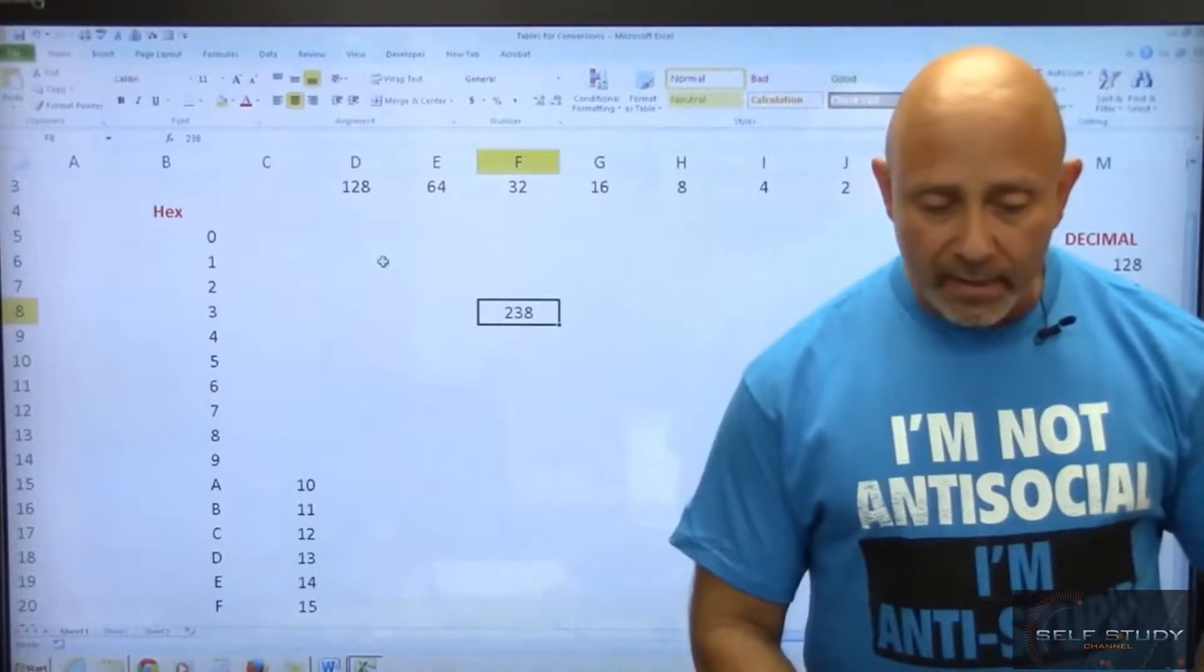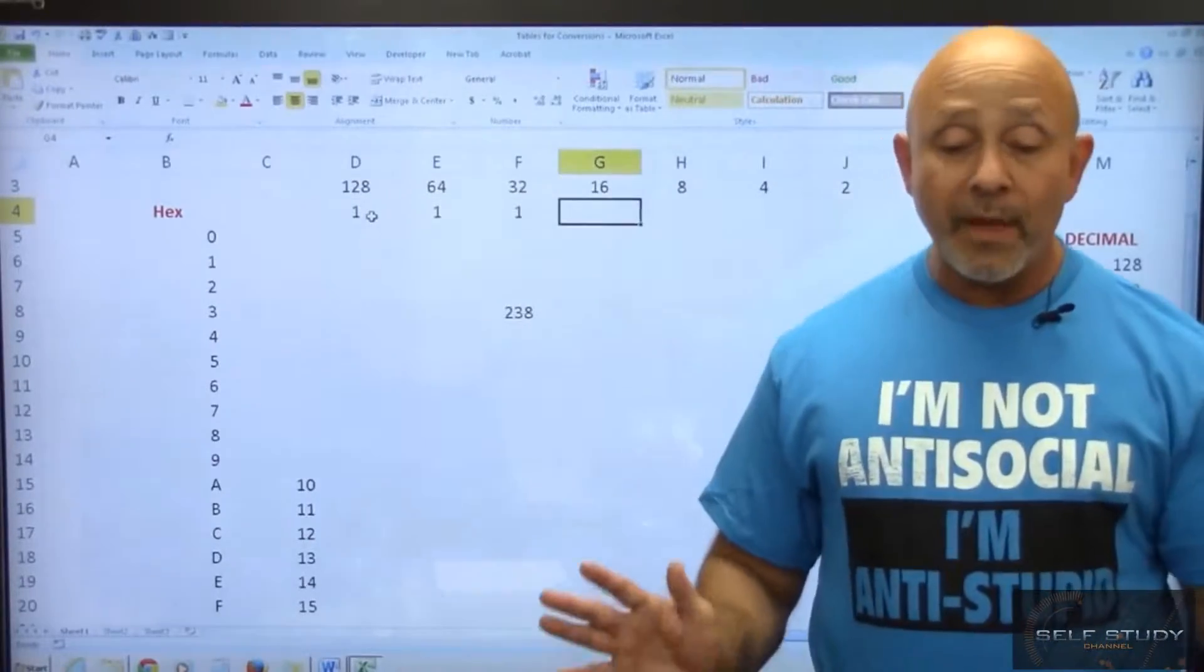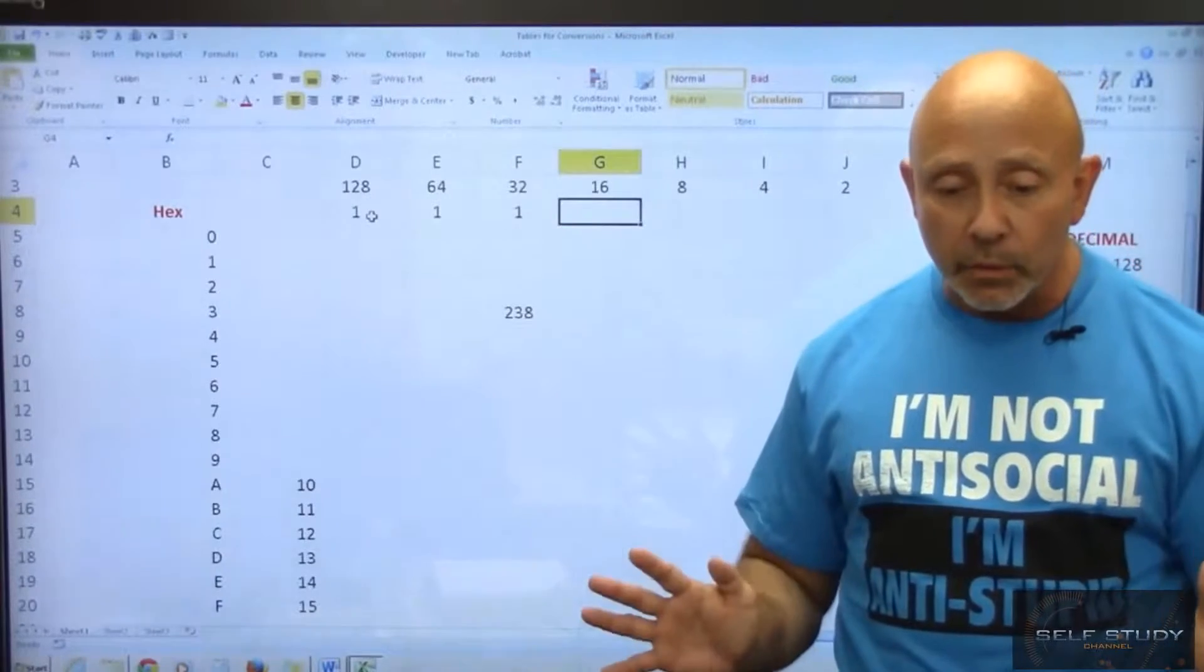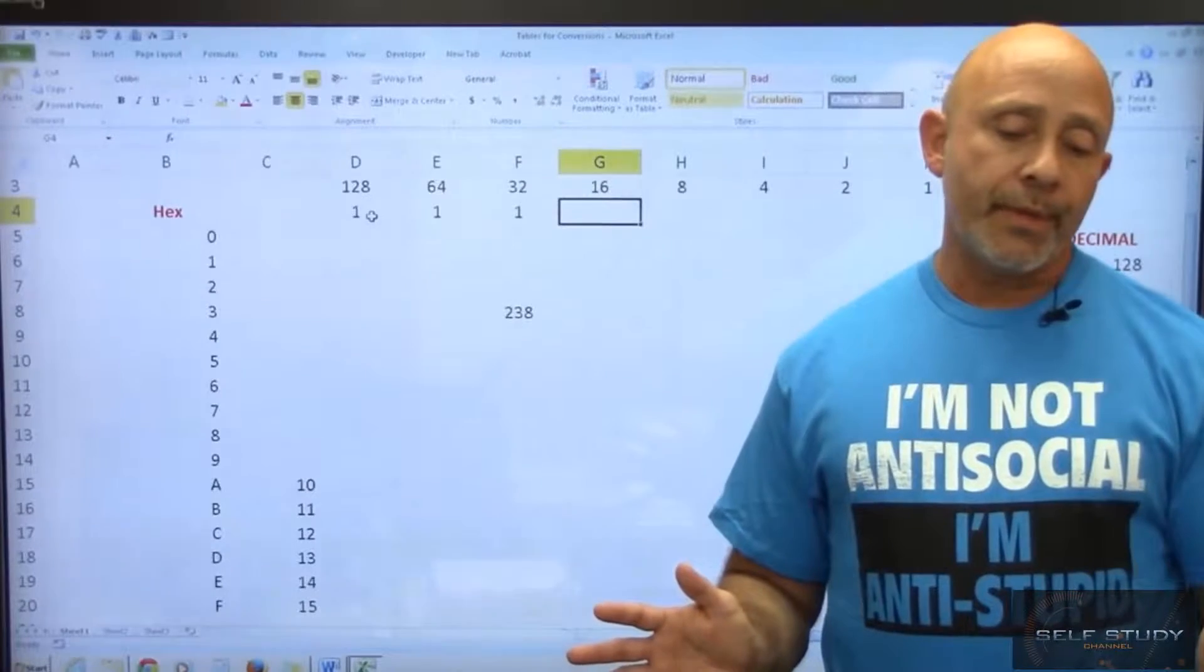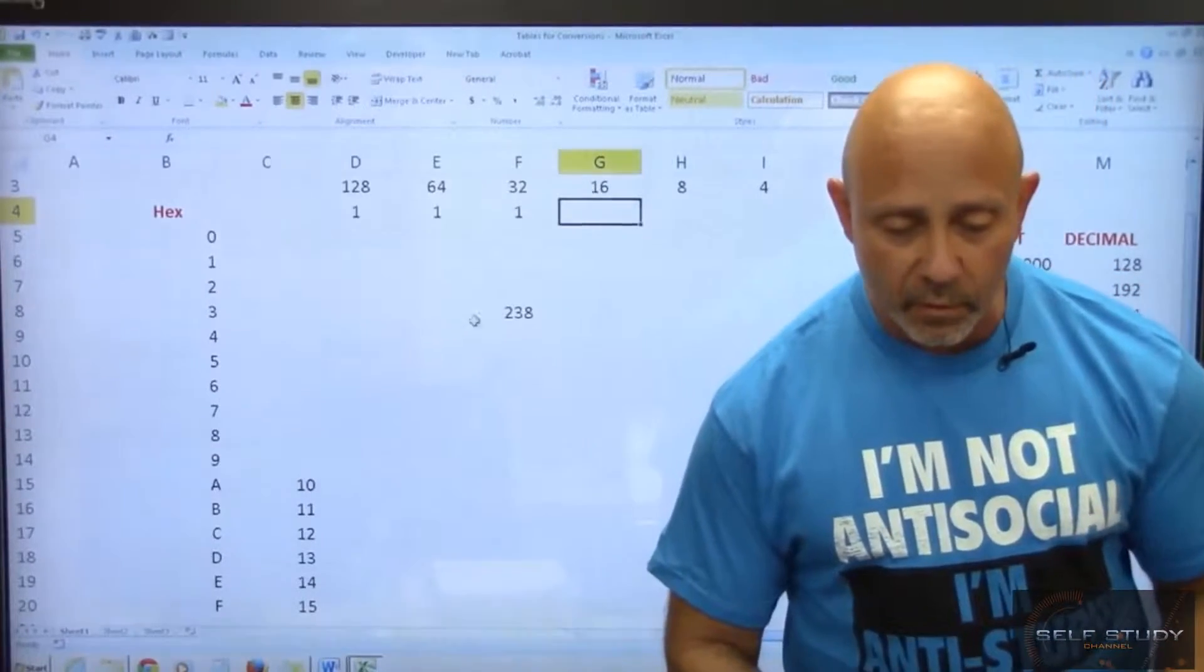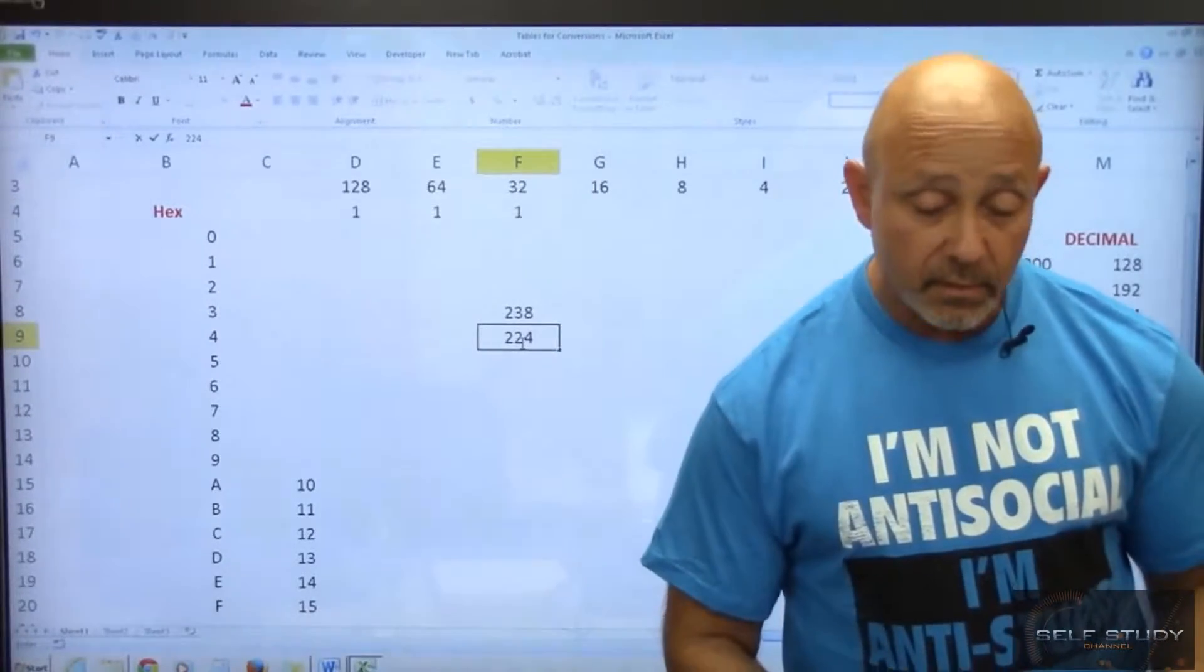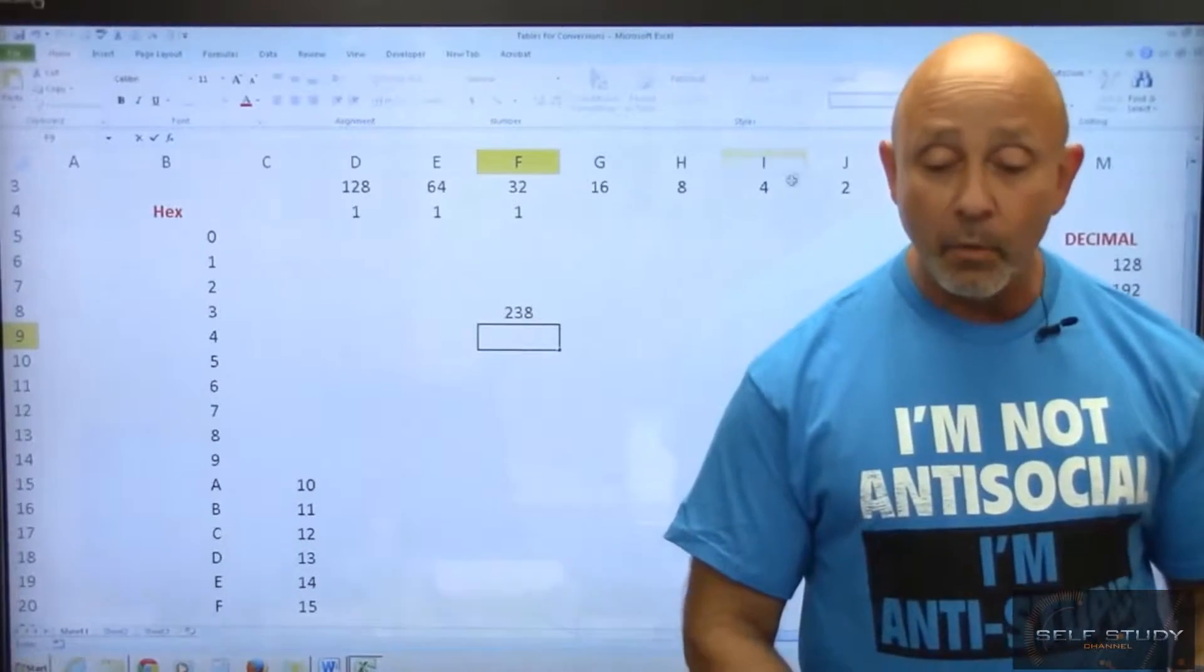So we got one, one, one. So we know that we have 224. So how many more do we need to get to 238? 224, we would need, that's a good one. Let's subtract. Let me put the number under here, 224. That would be 14. I had to visually see it, we'll need 14 more.